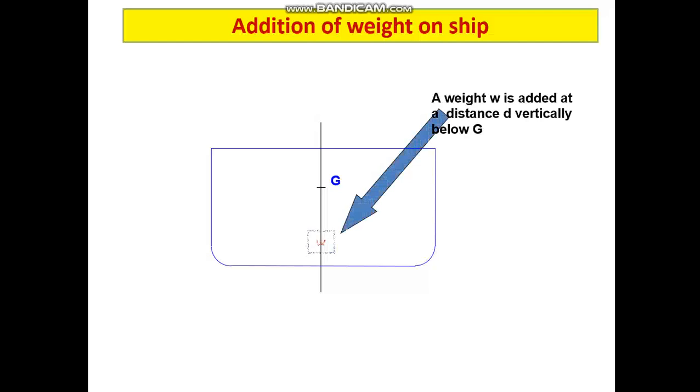Similarly, if a weight w is added at a distance d which is vertically below G, such that the weight w is at a distance small d from the center of gravity G, this will cause a lowering of the center of gravity from original center of gravity G to G1. The distance GG1 we can find out using this formula: w into d divided by W plus w.